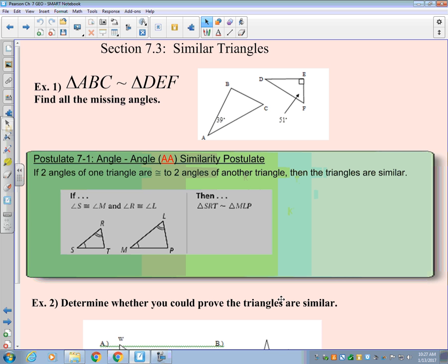So we are following a similar progression here with similar polygons. We proved polygons were similar. Now we're going to prove, pull up some easier ways to prove specifically triangles are similar. So we're going to take a look at an example one together.